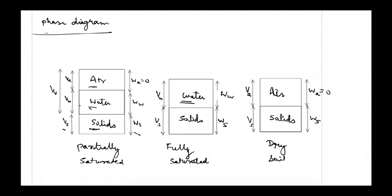For a partially saturated sample, on the left-hand side Vs represents the volume of solids, Vw represents the volume of water, and Va represents the volume of air voids. On the right-hand side, Ws represents the weight of solids and Ww represents the weight of water. The weight of air is negligible, so we take it as zero. For a fully saturated sample, all voids are filled with water, so there are no air voids — we have volume of solids, volume of water, weight of solids, and weight of water.